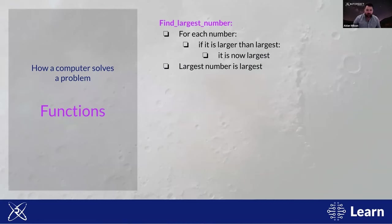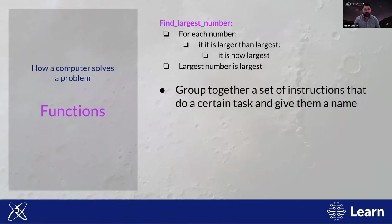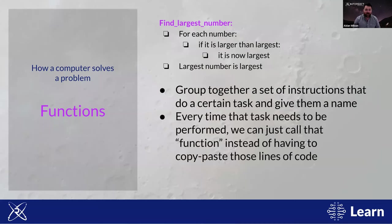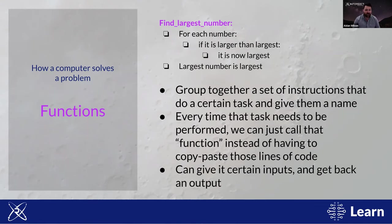The final concept is functions. At a very basic level, a function groups together a set of instructions that do a certain task and gives them a name. That function can then be run again just by invoking its name, rather than copying and pasting the code. A function can take different inputs and yield different outputs. Functions are often described using the analogy of a recipe — once you've done the trial and error to find a working recipe, you write it down so you can repeat it easily, and others may have already published recipes you can use.